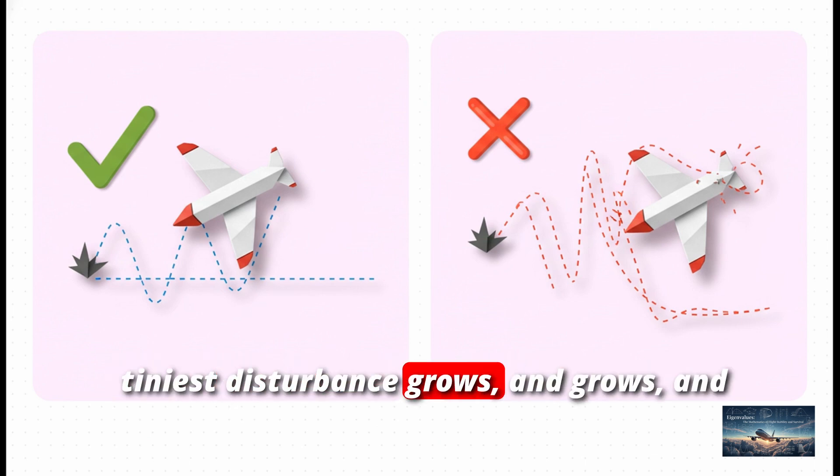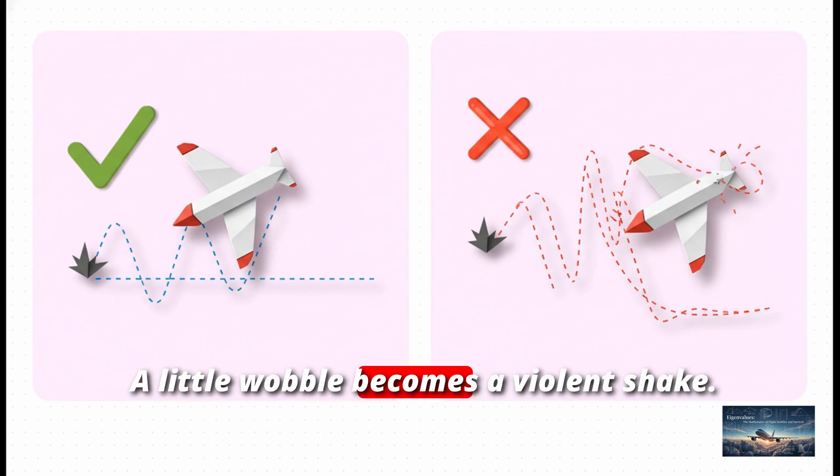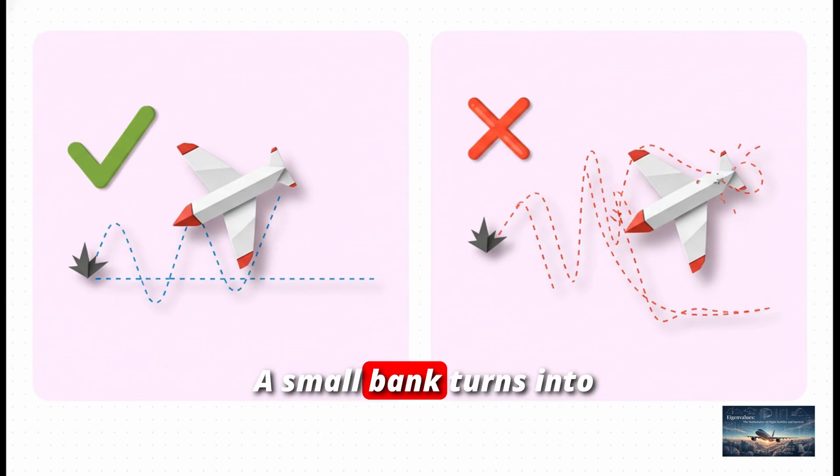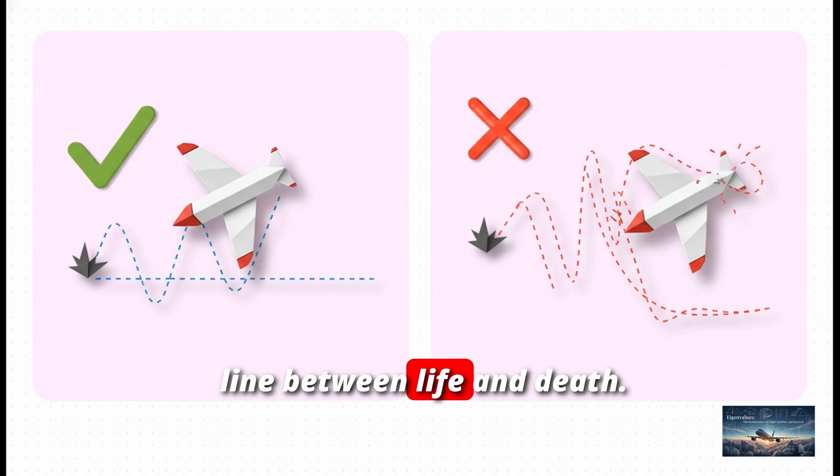But if that sigma is positive, even the tiniest disturbance grows. And grows. And grows exponentially. A little wobble becomes a violent shake. A small bank turns into an uncontrollable dive. That's danger. The sign of sigma is the mathematical line between life and death.